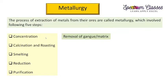Concentration of ores means removal of gang or unwanted impurities from the ores. There are different methods for removal of this gang and matrix from the ores which we are going to discuss in this video. Calcination and roasting is the heating of the ores below the melting point in the absence of oxygen and in the presence of oxygen respectively.